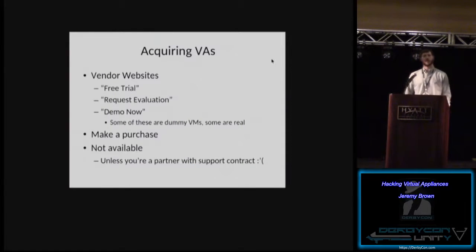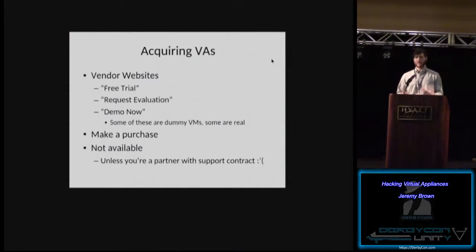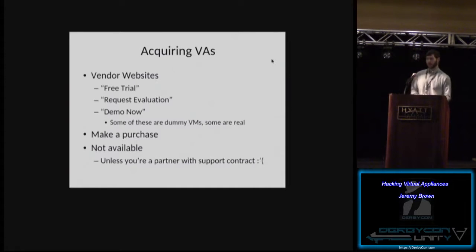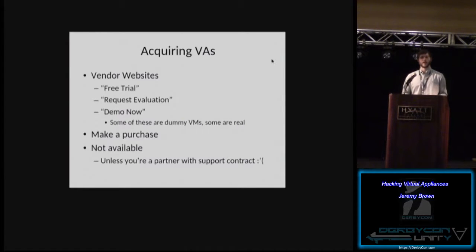How do you get these appliances? On the website, look for 'free trial,' 'request evaluation,' or you can look for demos, or actually make a purchase. If you want to make an investment, you might find bugs in the device and be able to make a living off that. Sometimes they're just not available — you see a really juicy virtual appliance and there's no way to buy it individually without being a company or having support contracts.